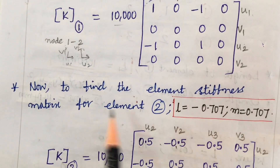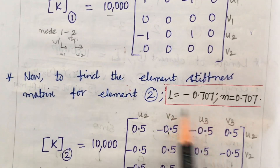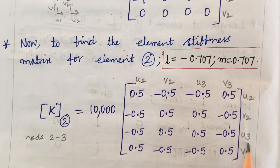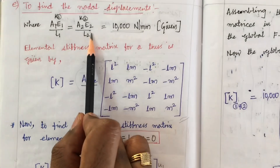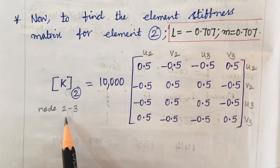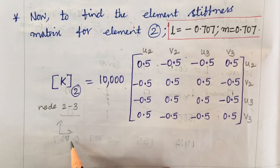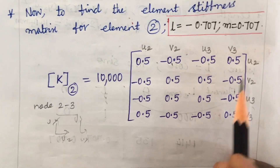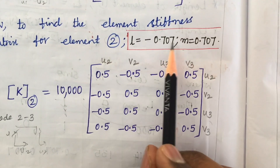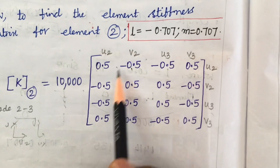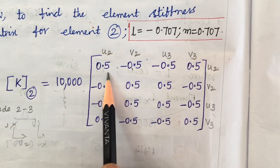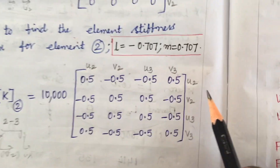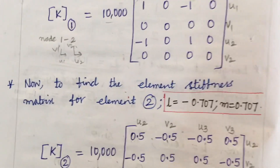For element 2, substituting l equal to negative 0.707 and m equal to positive 0.707 into the stiffness matrix formula with coefficient 10,000, you get values of approximately 0.5 rounded off. The nodes for element 2 are 2 and 3, so the degrees of freedom along the rows and columns are written as u2, v2, u3, v3 to prepare for assembling the global stiffness matrix.